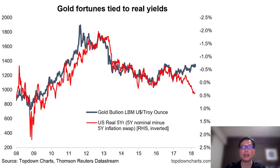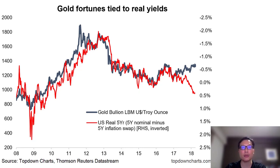This is why another driver for gold price is the real yield. Real yield is basically the nominal yield adjusted for inflation. The black line here is the gold price, with the y-axis on the left showing the price. The red line shows the inverted real yield, with the y-axis on the right indicating the yield in percentage. You can see the close relationship between the two. So if the Fed hikes interest rates while inflation is steady or even coming down, the real yield actually increases and that becomes a headwind for gold.